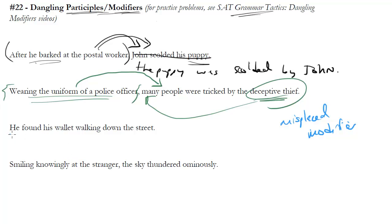It's literally saying, he found his wallet walking down the street. Remember, modifiers usually modify the thing they come right next to. So here, wallet is the thing walking down the street. He found his wallet walking down the street.